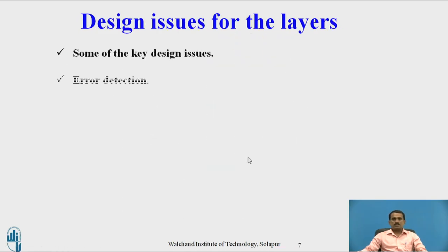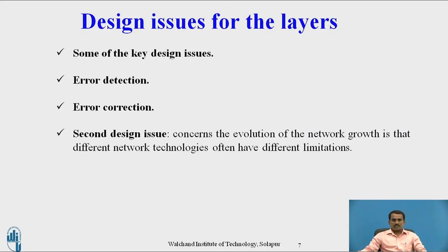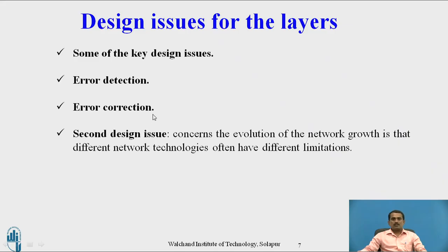Design issues for the layers. Some of the key design issues are error detection — while transmitting the data, if the data is discarded or corrupted, we have to find out where exactly the error occurred. Error correction: after detecting the errors, the user finds out how to correct them. Different methods such as CRC and Hamming code can be used for error detection as well as error correction.